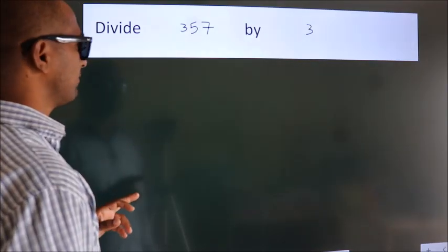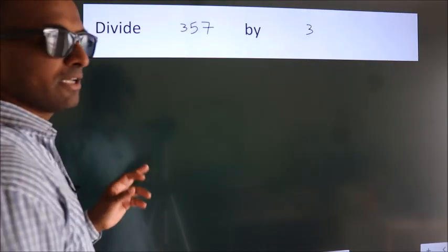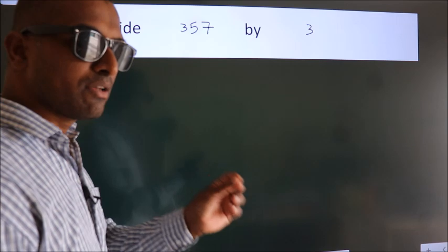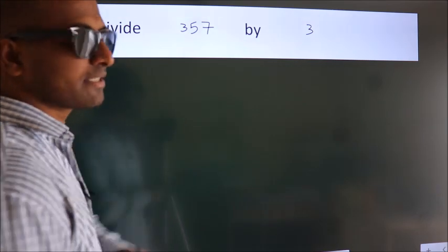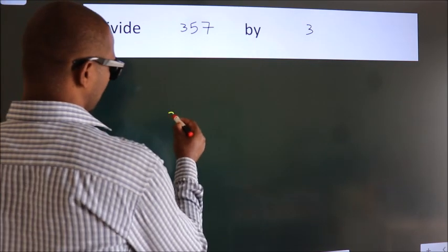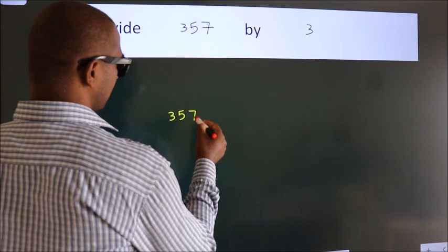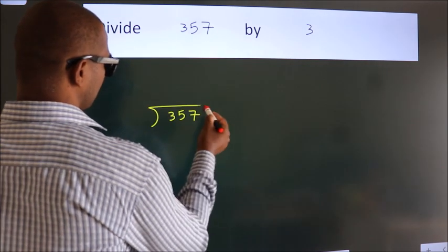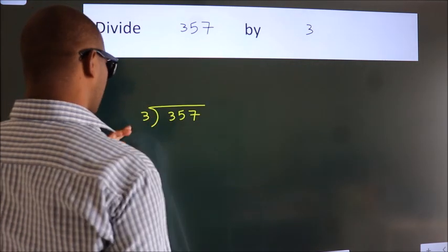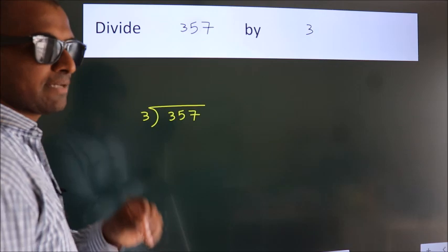Divide 357 by 3. To do this division, we should frame it in this way. 357 here, 3 here. This is your step 1.